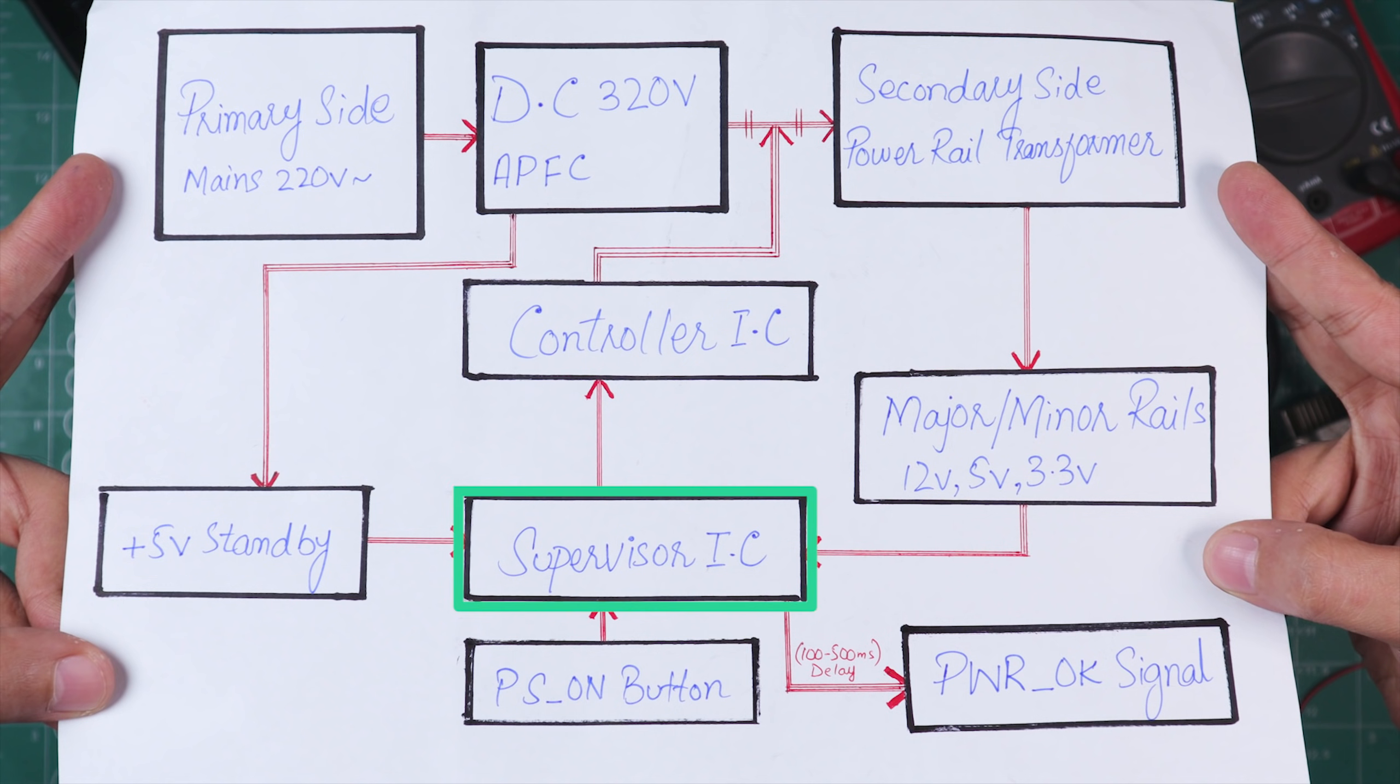Now supervisor IC is one of the most important safety features designed in every power supply because it first makes sure that everything is working fine, every voltage is under the limit, and then it sends power OK signal to our motherboard so that it can turn on.